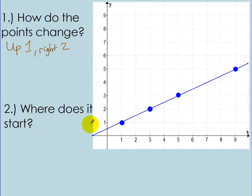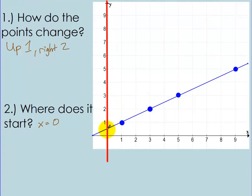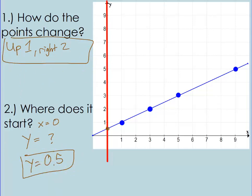So where is it starting? When I ask where it starts, that means where it is when x equals 0. x equals 0 happens on this y-axis right here. So when x equals 0, what does y equal? You look right here — it's halfway between 1 and 0, so it actually starts at y equals 0.5. So the rule is: up 1, right 2, and it starts where y equals 0.5.